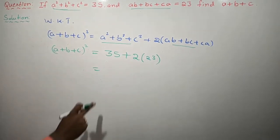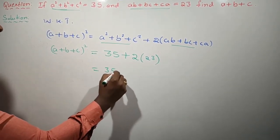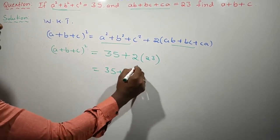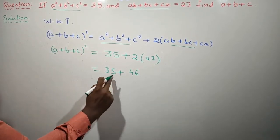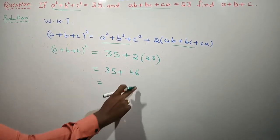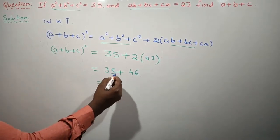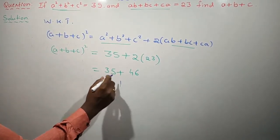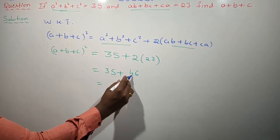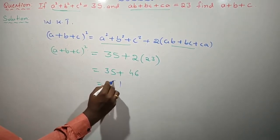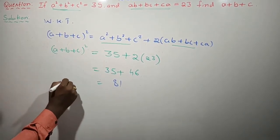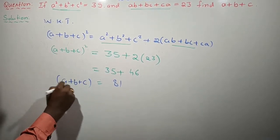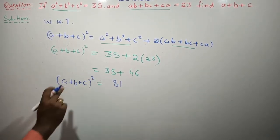So, a plus b plus c whole squared is equal to 35 plus 2 into 23. Two threes are 6, two twos are 4. Adding: 5 plus 6 is 11, carry 1. 1 plus 4 is 5, plus 3 is 8. So we get 81. Left-hand side: a plus b plus c whole squared is equal to 81.